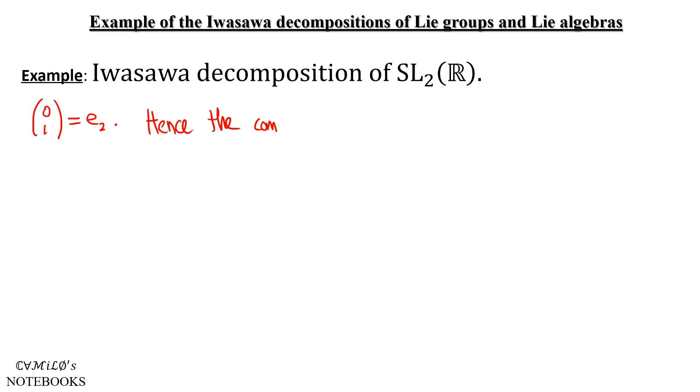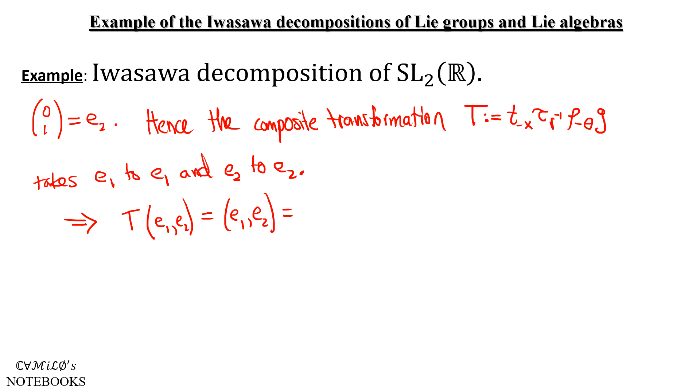So hence, the composite transformation, call it capital T, T_{-X}, composed with τ_R inverse, composed with ρ_{-θ}, composed with G, takes E₁ to E₁ and E₂ to E₂. Hence, it follows that this transformation must be the identity matrix. So we have this formula that T_{-X} τ_R inverse ρ_{-θ} times G is the identity 2 by 2 matrix.